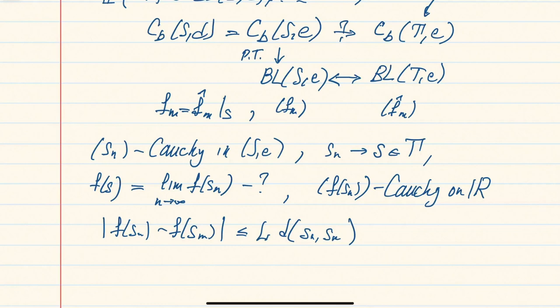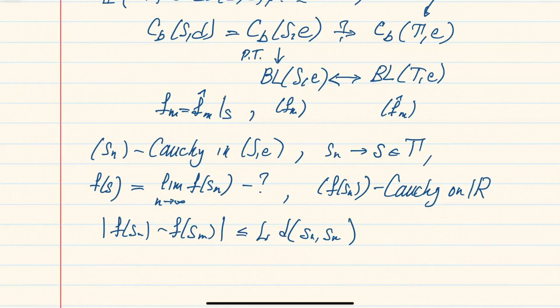That's why we had to use the Portmanteau theorem first and then apply this construction using the completion — the idea that by changing the metric you can think of your space as almost compact. We had to pass through bounded Lipschitz functions. We'll see another application of the Portmanteau theorem a little later when we compare the bounded Lipschitz and Prokhorov-Lévy metrics, which we will define next.